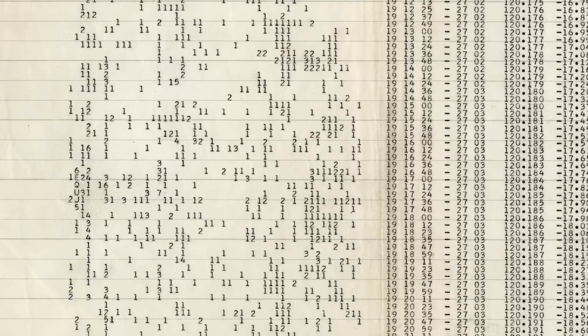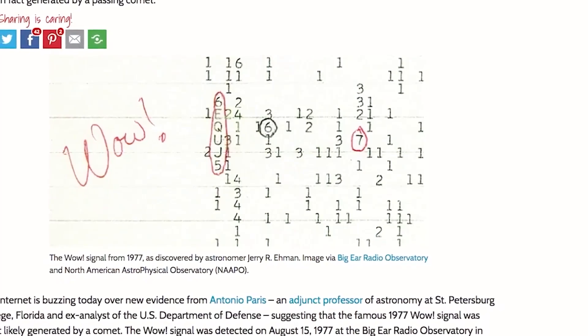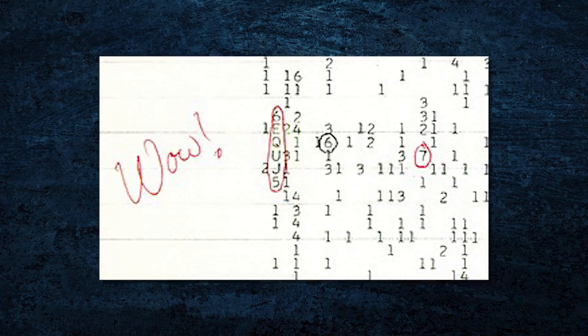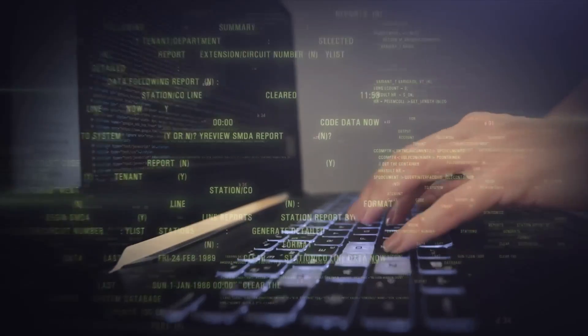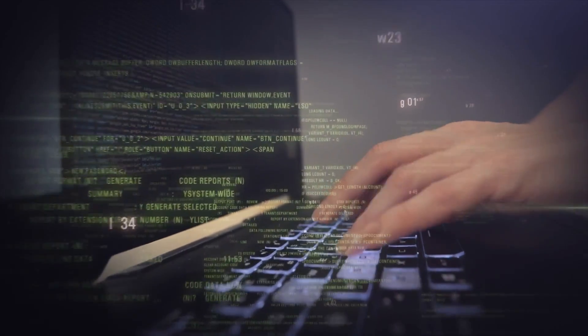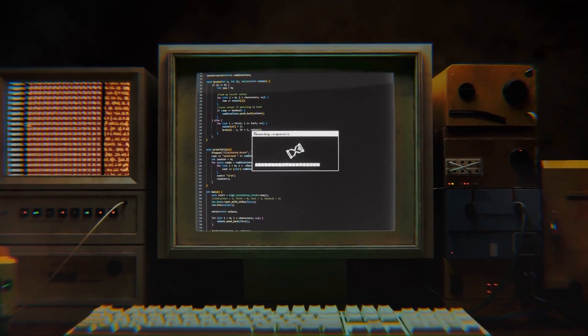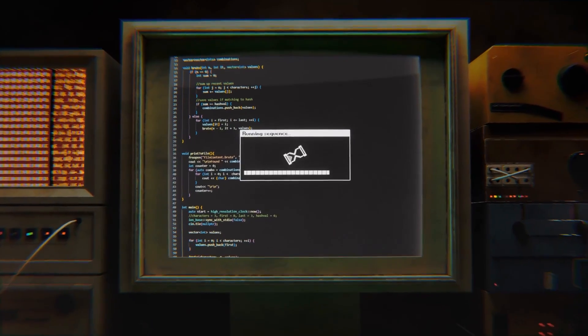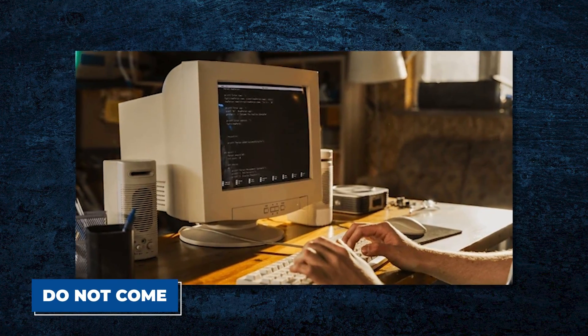The WOW signal had been a mystery for decades. But this new information cast it in a terrifying new light. The signal, NASA said, contained a series of pulses, a code. And as they pieced together the message, one chilling truth began to emerge. It wasn't a greeting. It wasn't a cry for help. It wasn't even an invitation. It was a warning. A warning not to look, not to respond, not to acknowledge. The message was clear: Do not come.